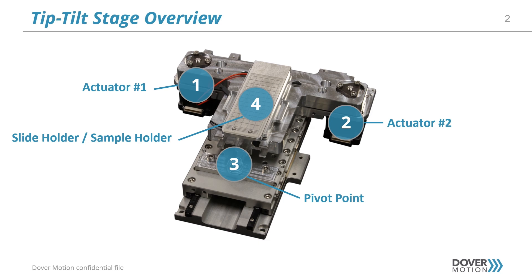Moving only actuator number one or actuator number two would provide a tilt or roll of the sample. Moving both actuators number one and two together would provide a tip or pitch of the sample with respect to the pivot point.